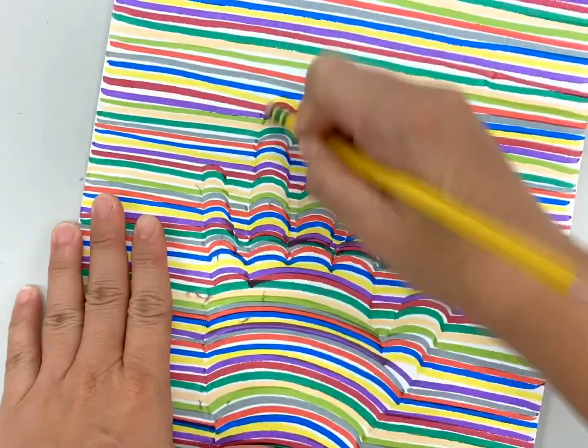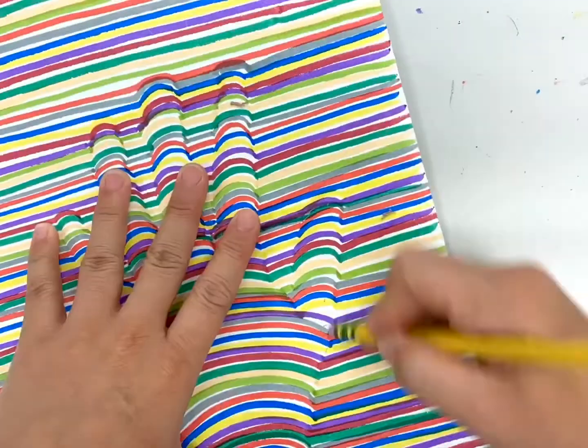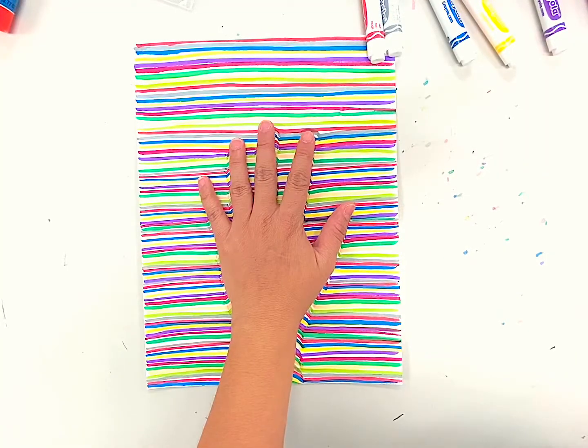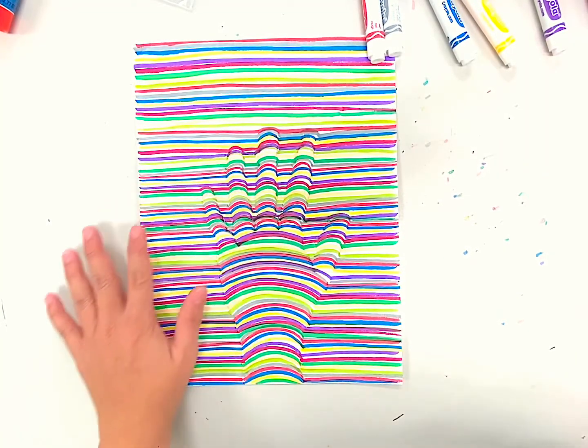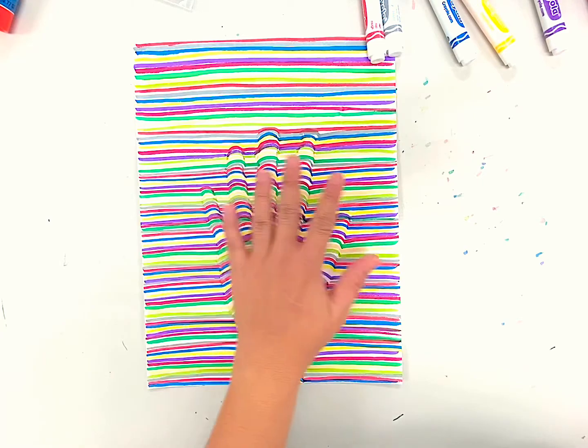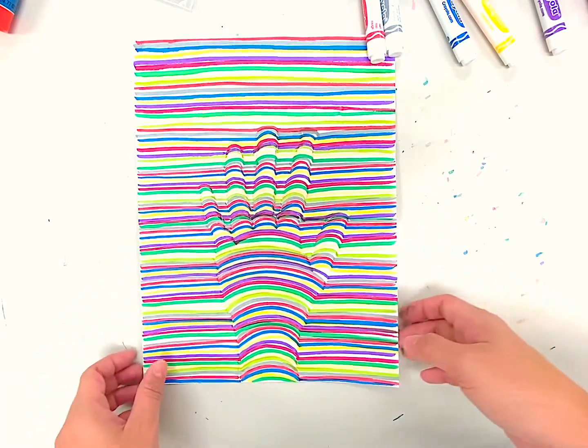After you finish with the lines, go back and erase your pencil hand tracing and you've got yourself an optical illusion hand.